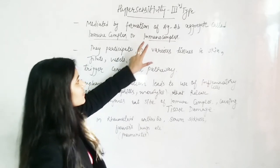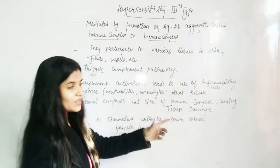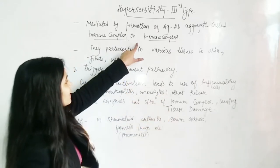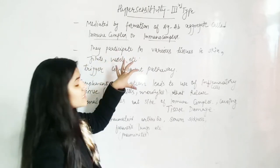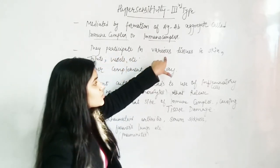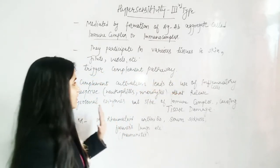What is the immune complex? This immune complex further activates your complement system. This immune complex can also be made in various tissues like skin, joints, vessels, etc.